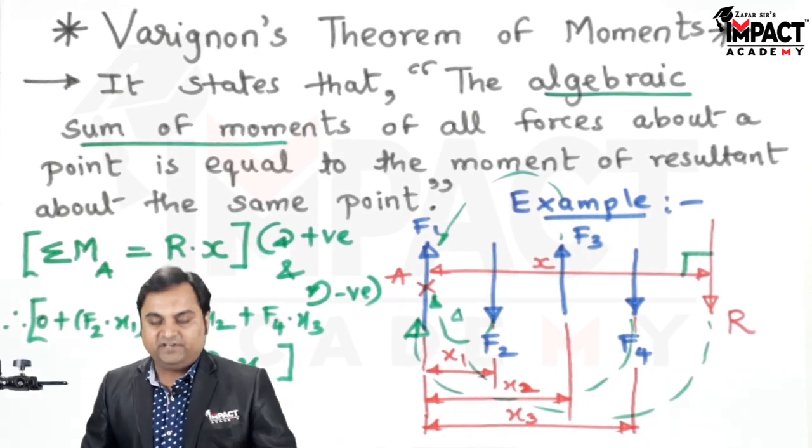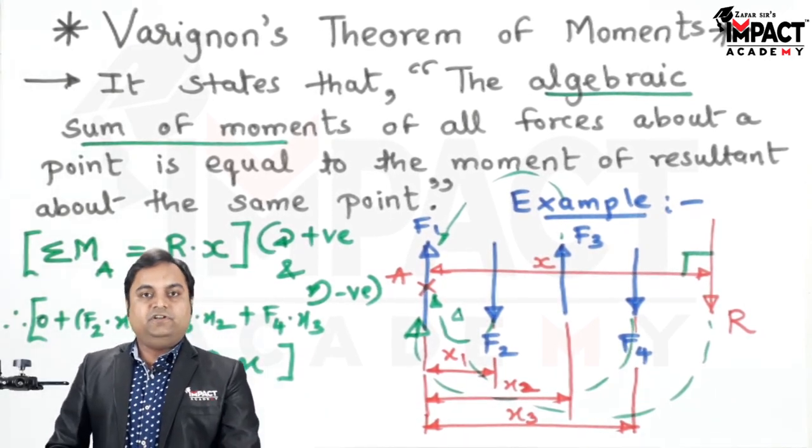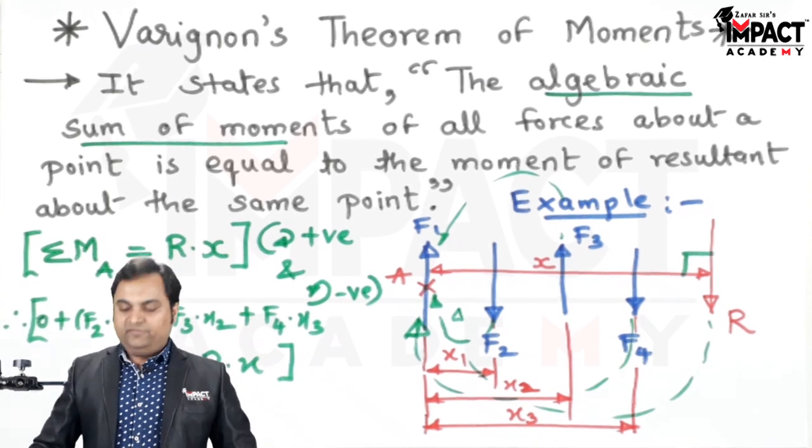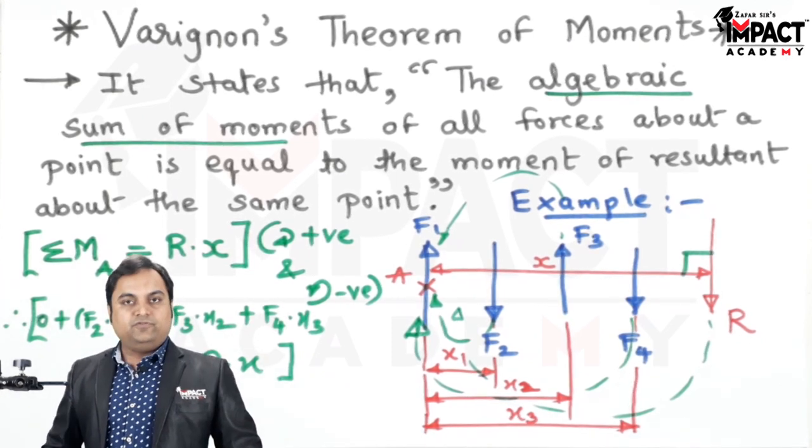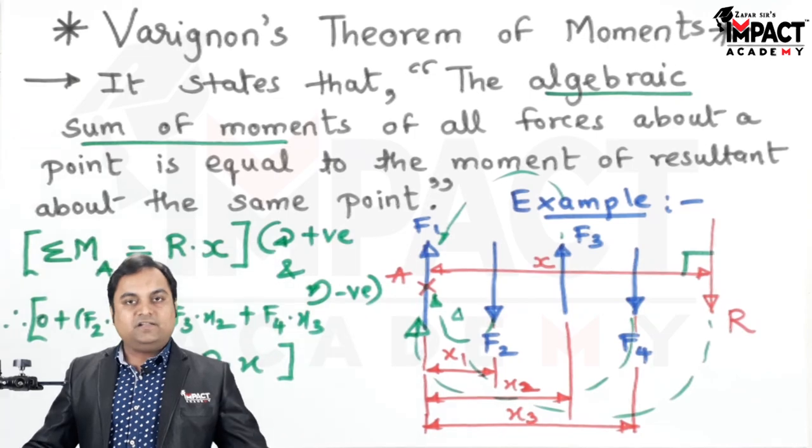So in short, that was an explanation of how to get the location of resultant by using Varignon's theorem of moments for non-concurrent forces that may be like or unlike parallel forces.